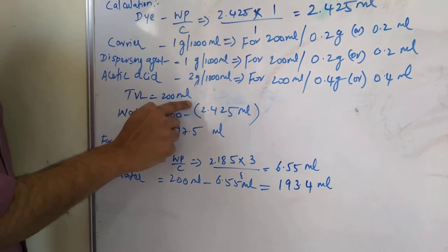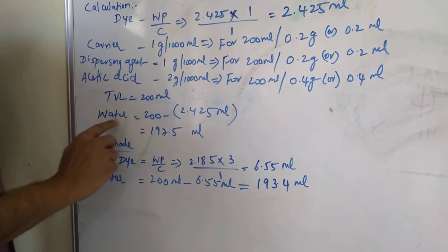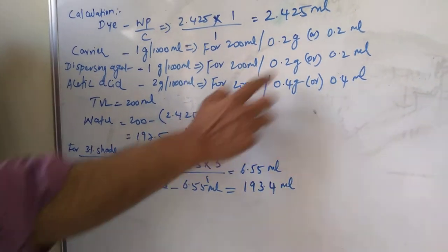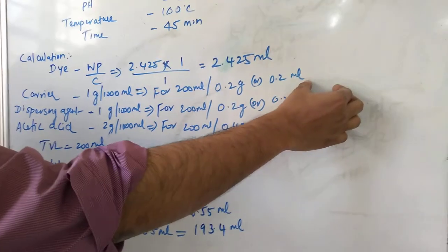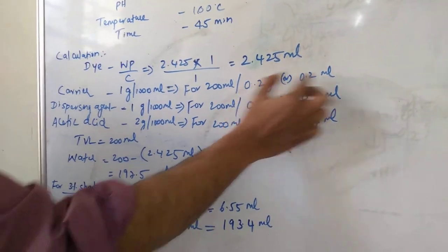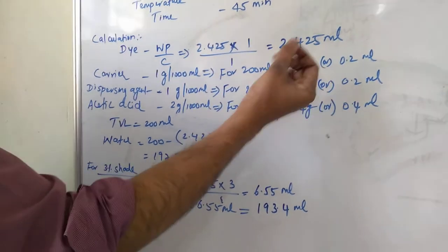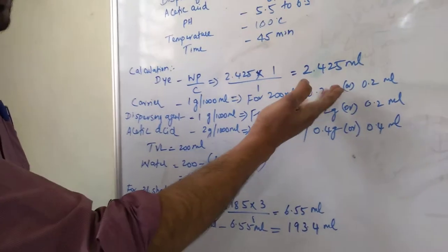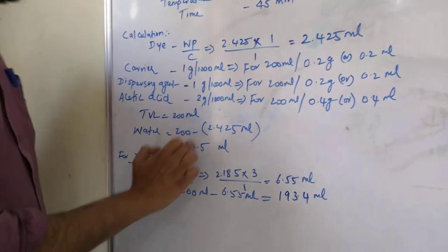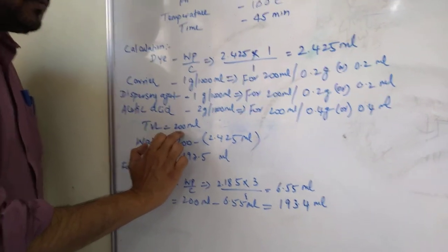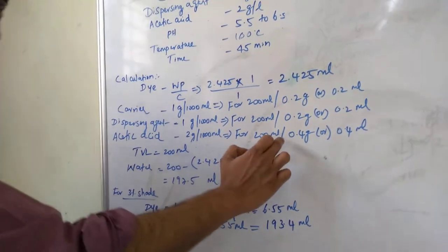And coming down to total volume of liquor of 200 ml, how much water you need? You need to subtract this with the dye solution. You can subtract this value also, but since assuming that the density is same and very minor quantities we are taking, I have not subtracted it. The values are very less. Directly the water required is 197.5, you subtract the total volume of liquor minus the dye solution. This is for 1 percent shade.